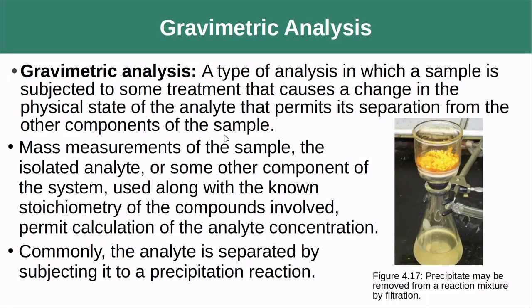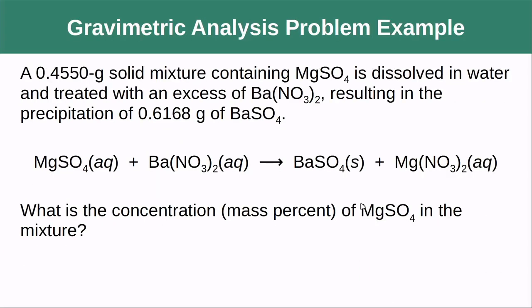Gravimetric analysis is basically when we treat some solution or sample in order to change the physical state of one of the reagents in it, and that allows us to separate it. One of the very classic examples is a precipitation reaction, because we get a solid that we can pretty easily filter out. After that, we determine the mass of the new material that we've created and separated from the reaction mixture, and that allows us to determine the number of moles of that substance produced. We'll also do a lab like this — our limiting reagents lab.